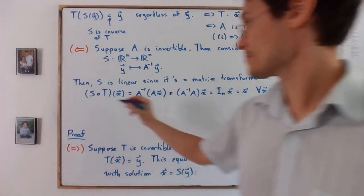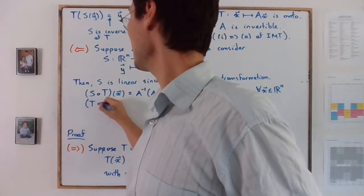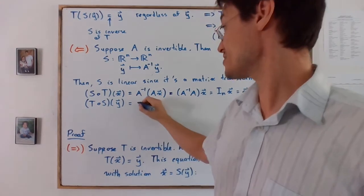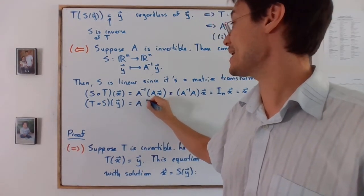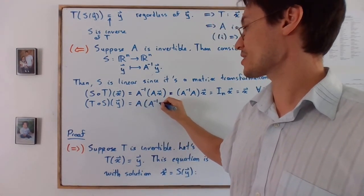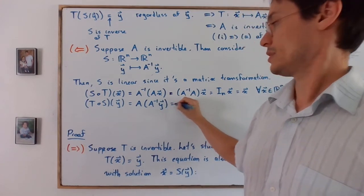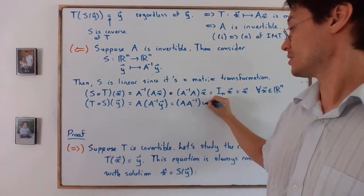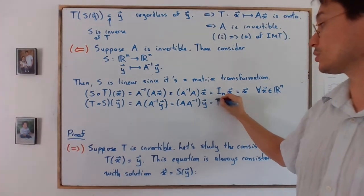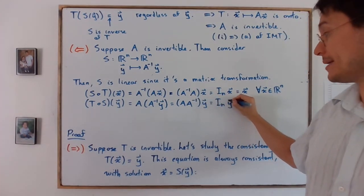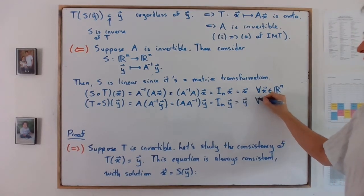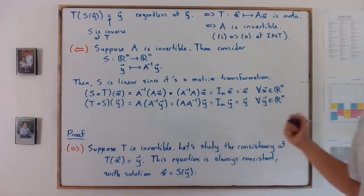Likewise, if we have T of S of y, then using the standard matrices, we have A of A inverse of y. With associativity, that's going to give us A A inverse of y, which is equal to I_n y, which is equal to y for every y in R^n.